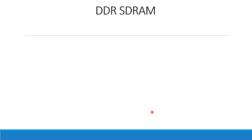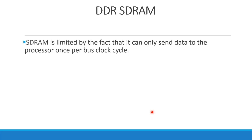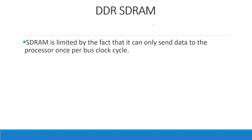DDR SDRAM — Double Data Rate SDRAM. SDRAM is limited by the fact that it can only send data to the processor once per bus clock cycle. What is a clock cycle? This is a clock cycle — it has a rising edge and a falling edge.